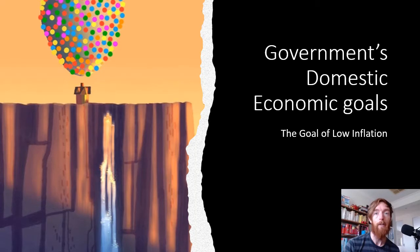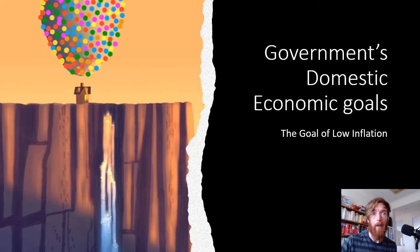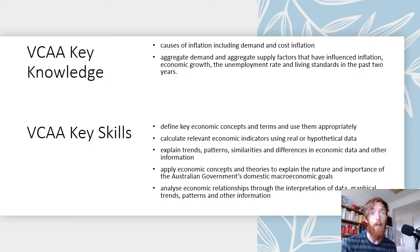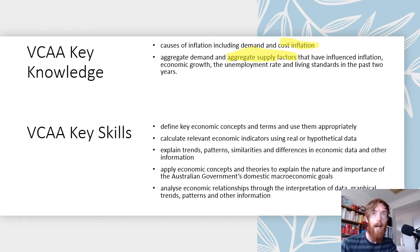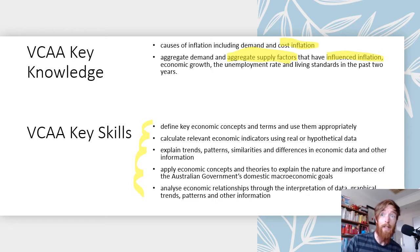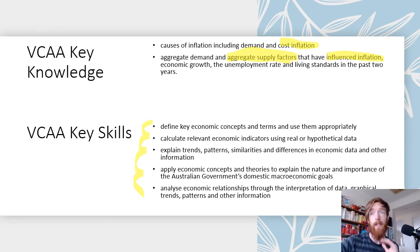In our third lesson we looked at how recent aggregate demand side factors could cause or ease demand inflation. Now we're on our final part, which is all about cost inflation. Our key skills are the same as the aggregate demand side — you're really bringing everything together to look at relationships between factors and apply real-world knowledge.